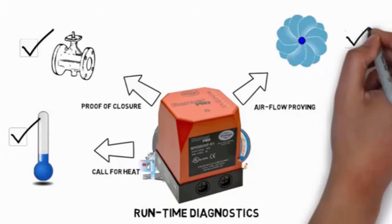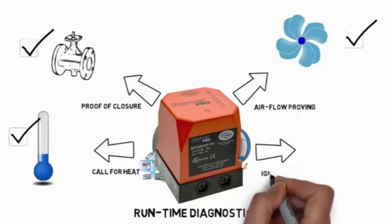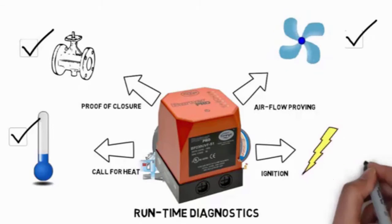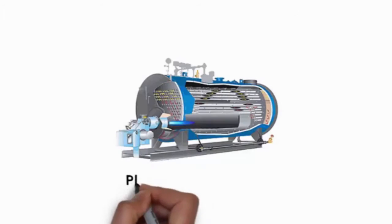The light off phase activates the ignition transformer. This then establishes the pilot, followed by a main flame.